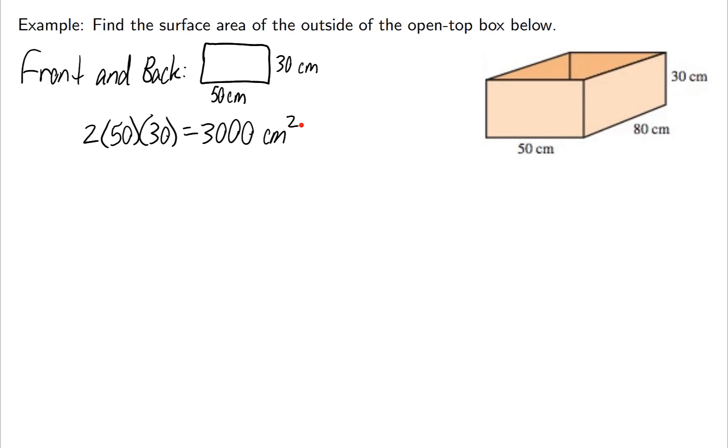Now let's do the next shapes. The left and the right side are 80 centimeters long and 30 centimeters tall. So since there are two of those again, we'll do 2 times 80 times 30, and we get 4,800 centimeters squared.